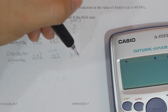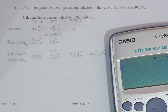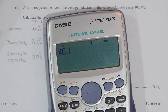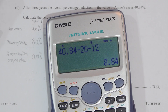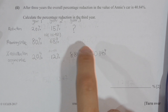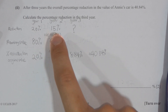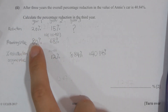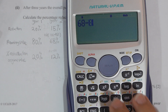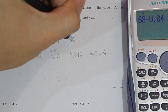The tricky part is identifying what 40.84% means. This 40.84% is essentially the sum of the yearly percentage reductions, which is 20 plus 12 plus an unknown, equalling 40.84%. By doing the subtraction, you can find that the yearly percentage reduction for the third year is 8.84%.